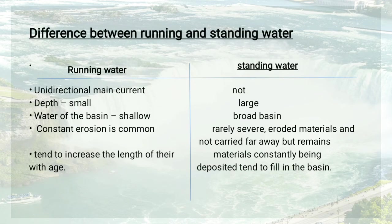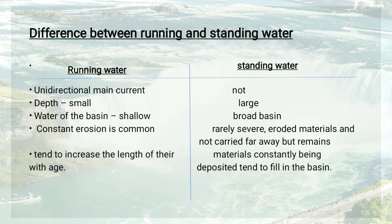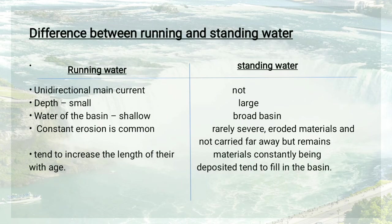The main difference between lotic (running) water and lentic (standing) water: the flow of running water is unidirectional — the main current is unidirectional — but standing water is not unidirectional. For depth, running water has small depth and a shallow basin, whereas standing water has large depth and a broad basin. Constant erosion is common with running water since they are always moving.